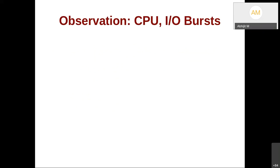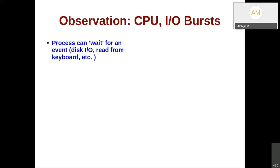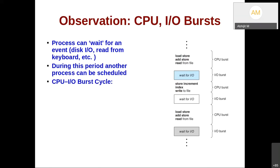An essential concept before discussing algorithms is the CPU burst and IO burst in process execution. A process can wait for an event such as disk IO, keyboard input, or network — in this case the process voluntarily decides it does not want to execute and wants to wait for IO. During this period another process can be scheduled. We say the process follows a CPU and IO burst cycle. A process may do some machine instructions (load, store) — that is a CPU burst — and then there is a read from a file, which constitutes an IO burst.